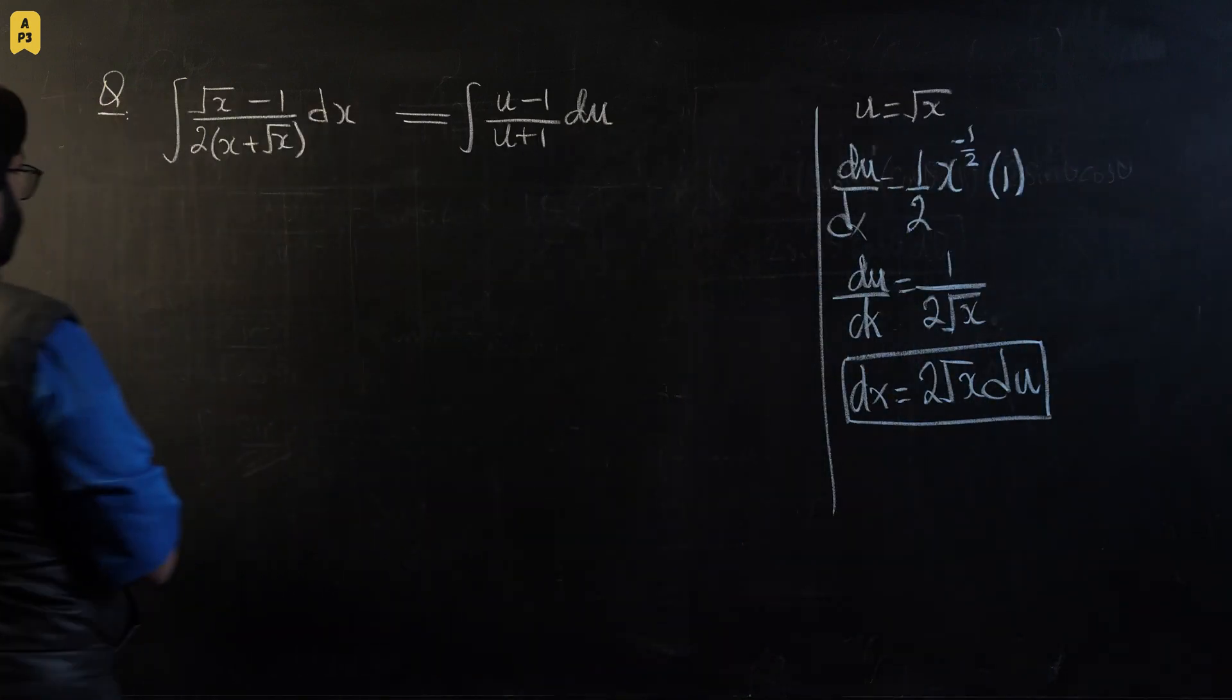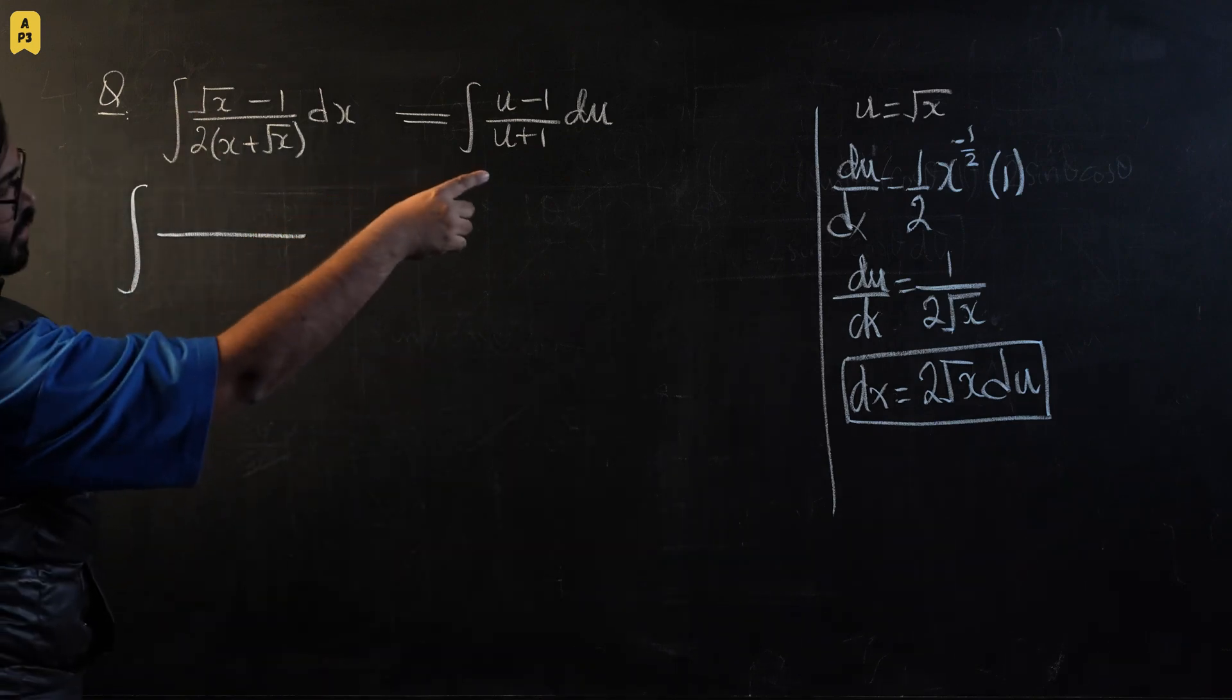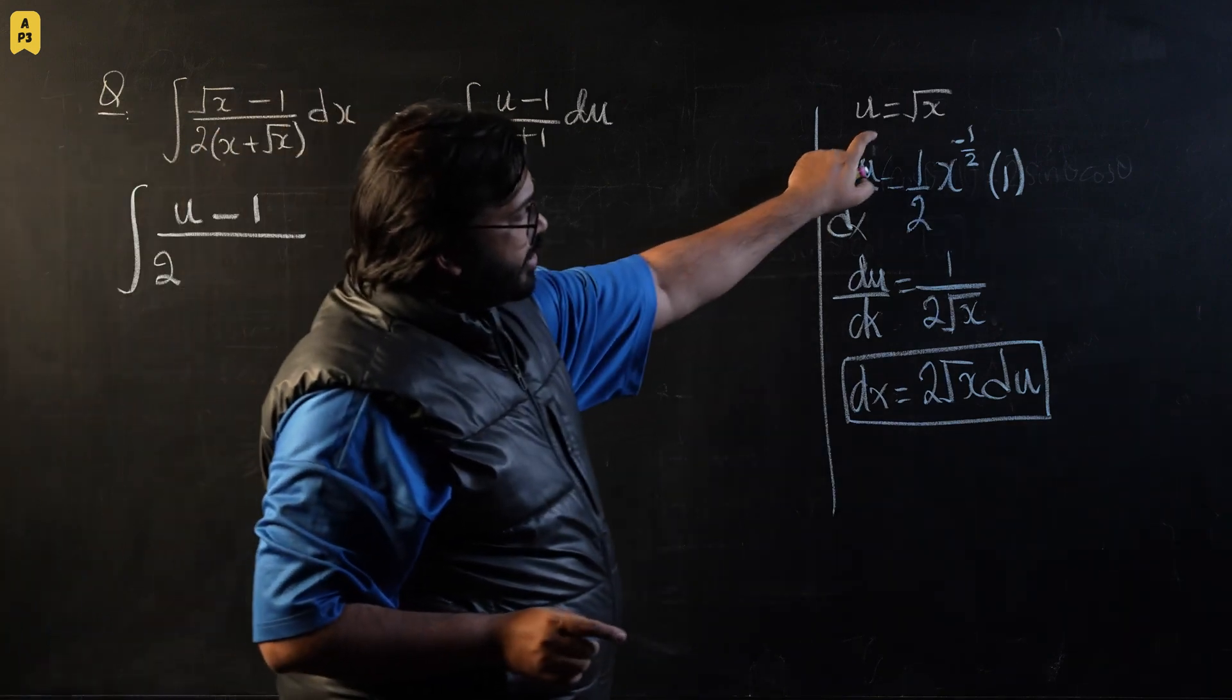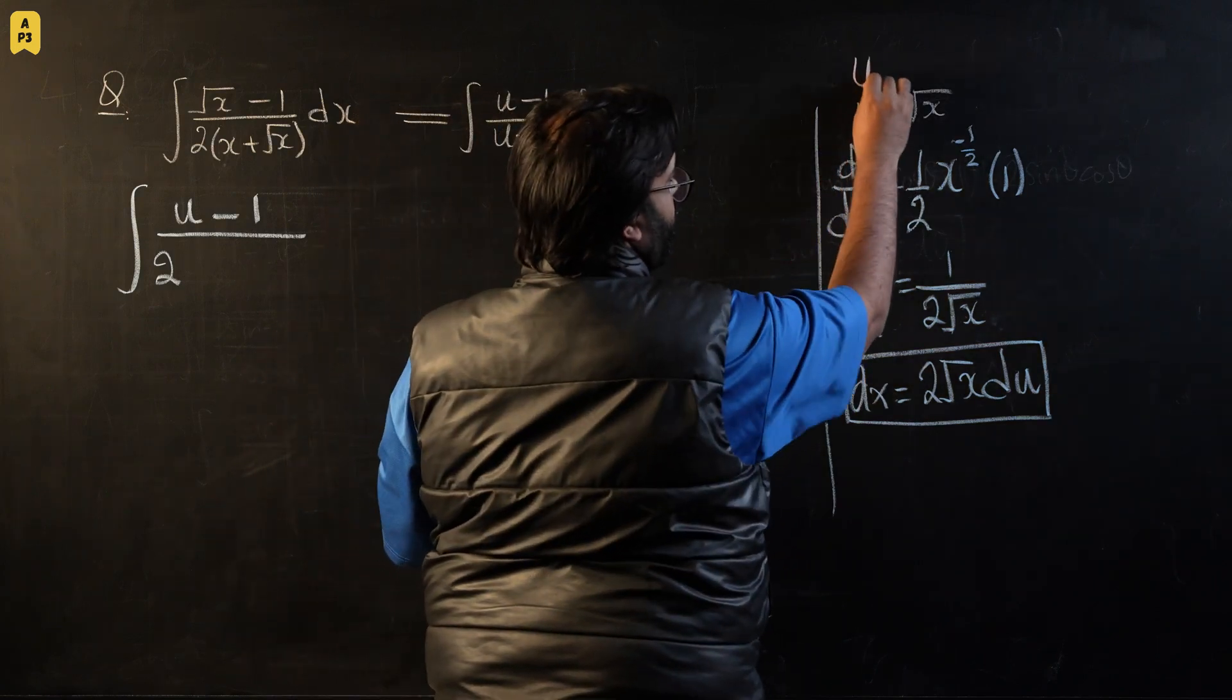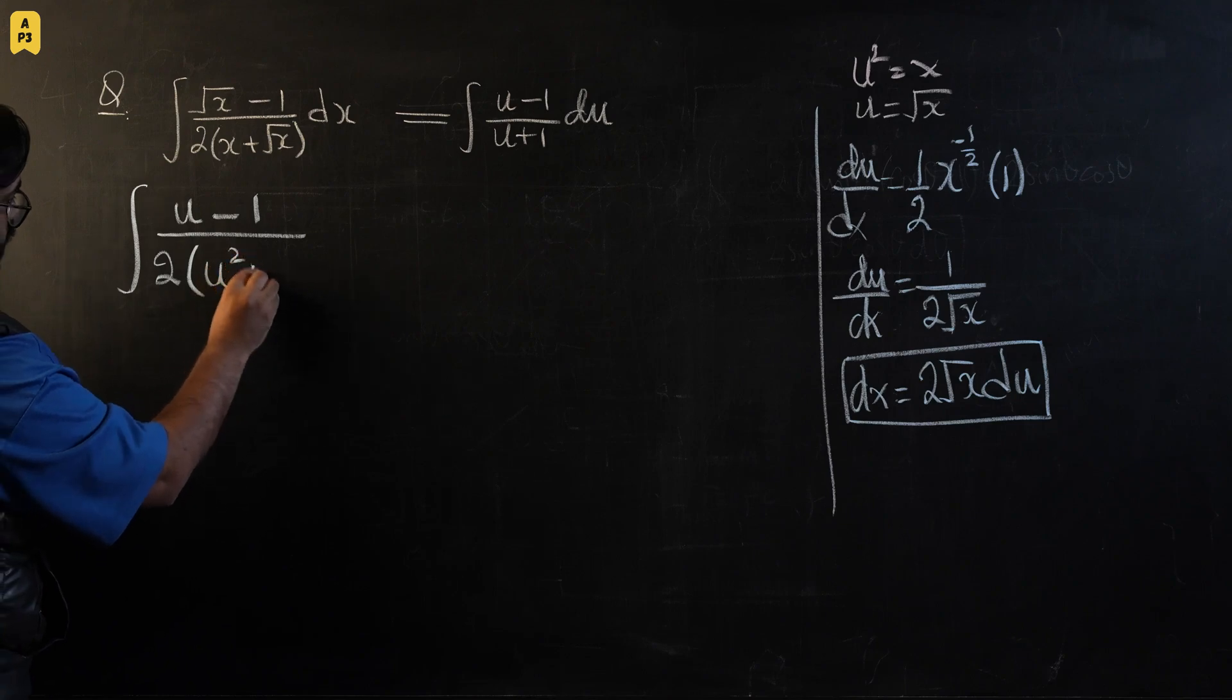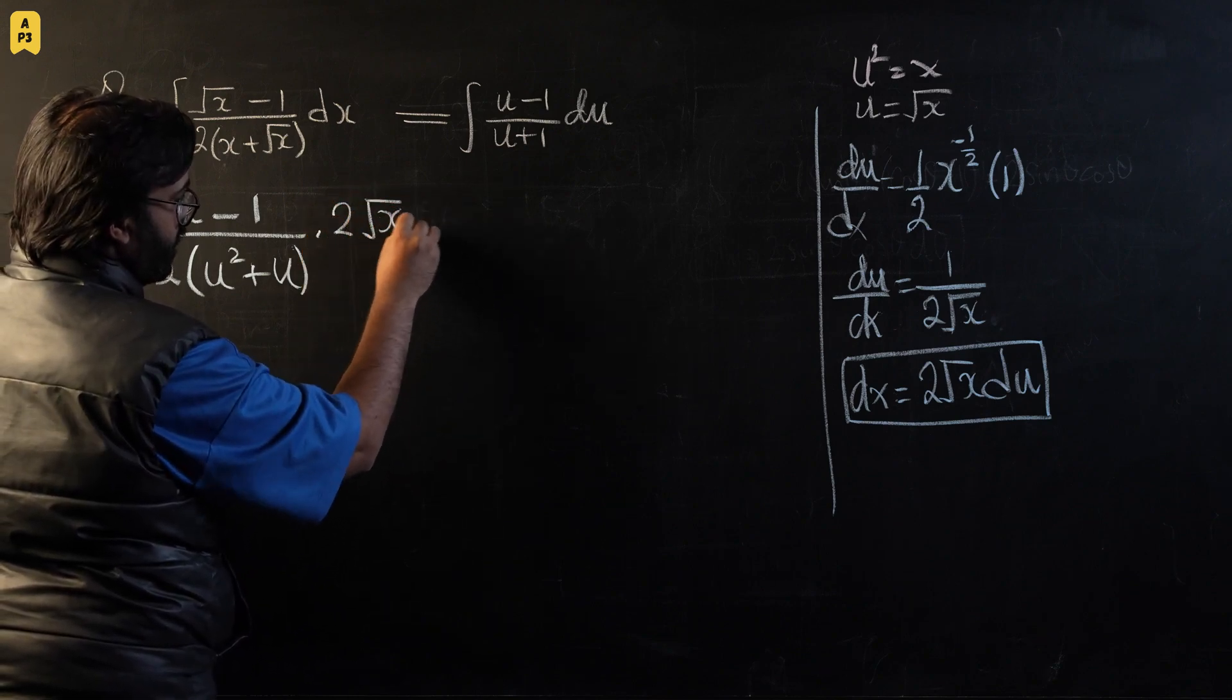So let's go on to the main expression and start substituting. So this will become square root x was equal to u. So this will become u minus 1 over 2 times this would become u squared. How do I know this? I know that u equals square root of x and if I square both sides I know that u squared will become equal to x. So this will become u squared plus u and in place of dx we're going to place 2 times square root of x du.